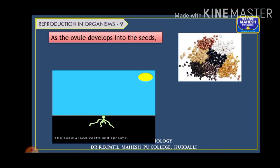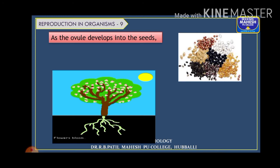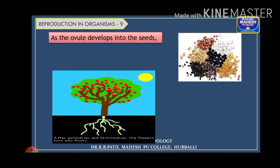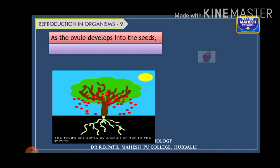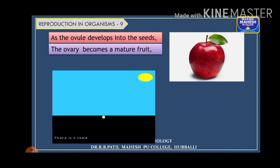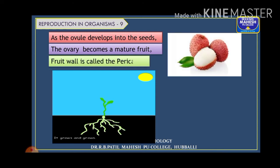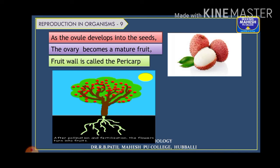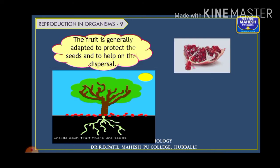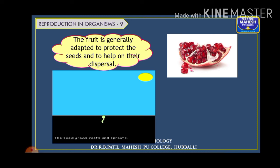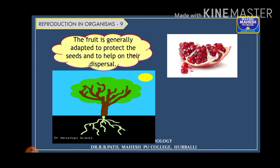Remember: the ovule develops into the seed — the seed is nothing but the mature or fertilized ovule. The ovary becomes the fruit; fruit is the ripened ovary. The ovary wall becomes the fruit wall, called the pericarp. The fruit is adapted to protect the seeds and help in their dispersal.